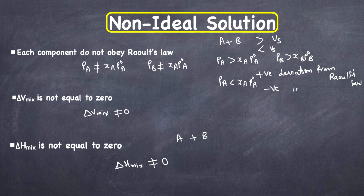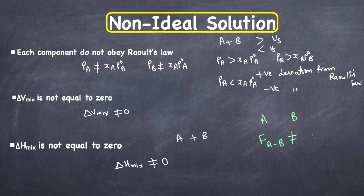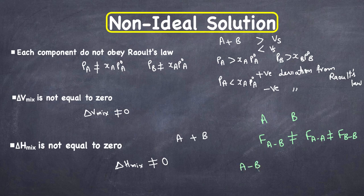Another characteristic is that the interactions between the components are different from those of the pure components. The intermolecular force of attraction between A and B is not equal to that between the pure components — F_AA is not equal to F_BB. In non-ideal solutions the force of attraction between A and B is either less than or more than that of the pure components, which is why heat is either generated or absorbed.